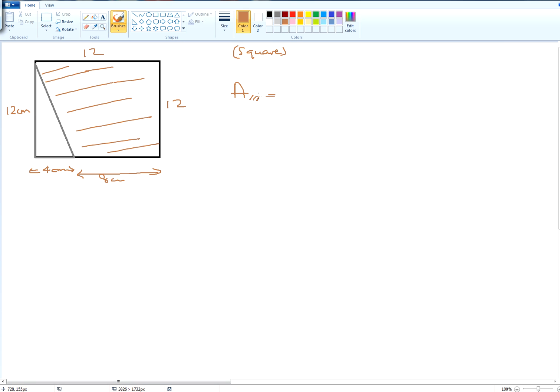We're going to look at this shaded area. We've been given a square with a length of 12 centimeters, and we want to find the shaded area. What is the idea? The shaded shape is equal to the area of the square minus the area of the triangle that's been cut out of it.